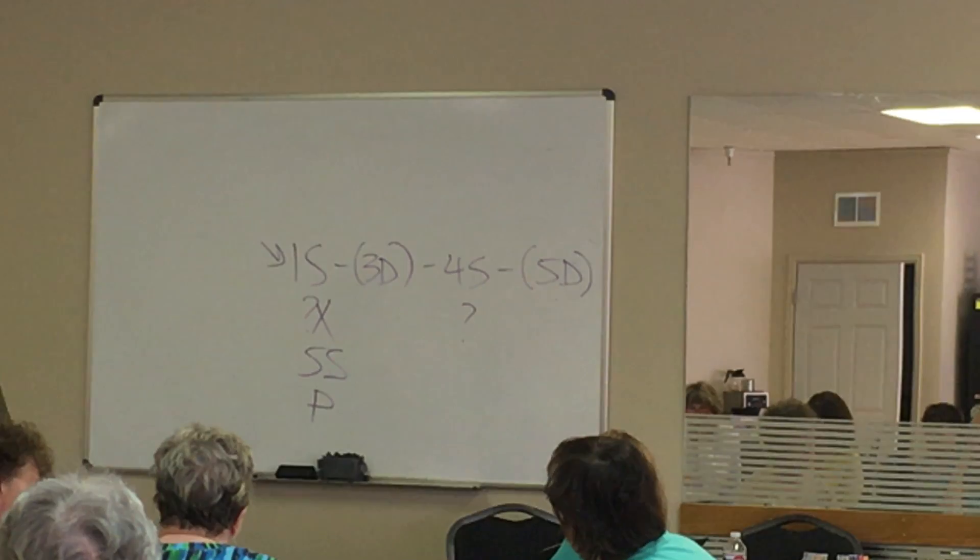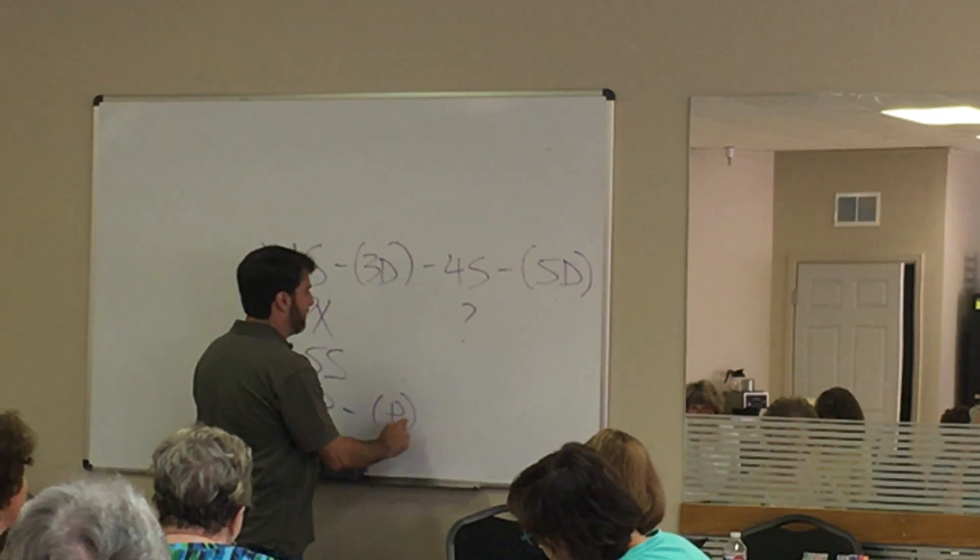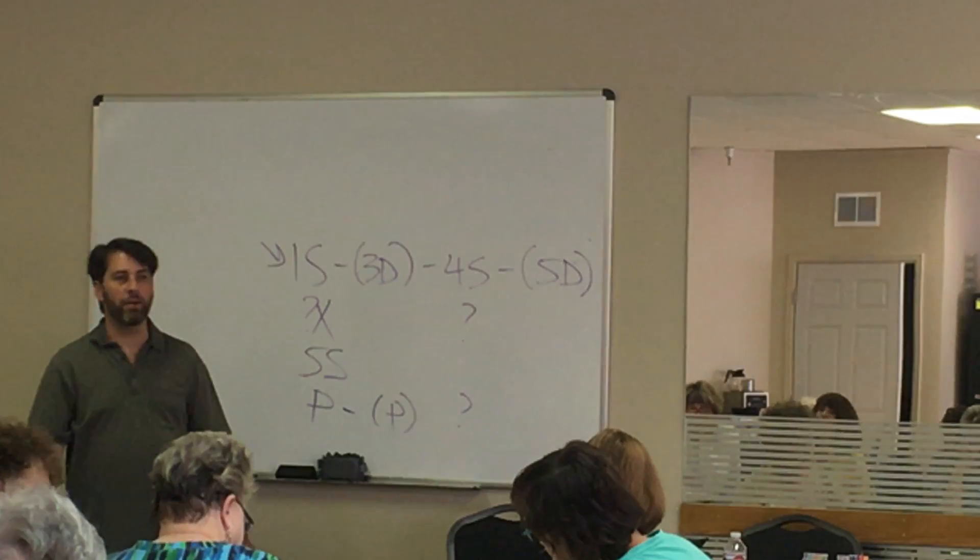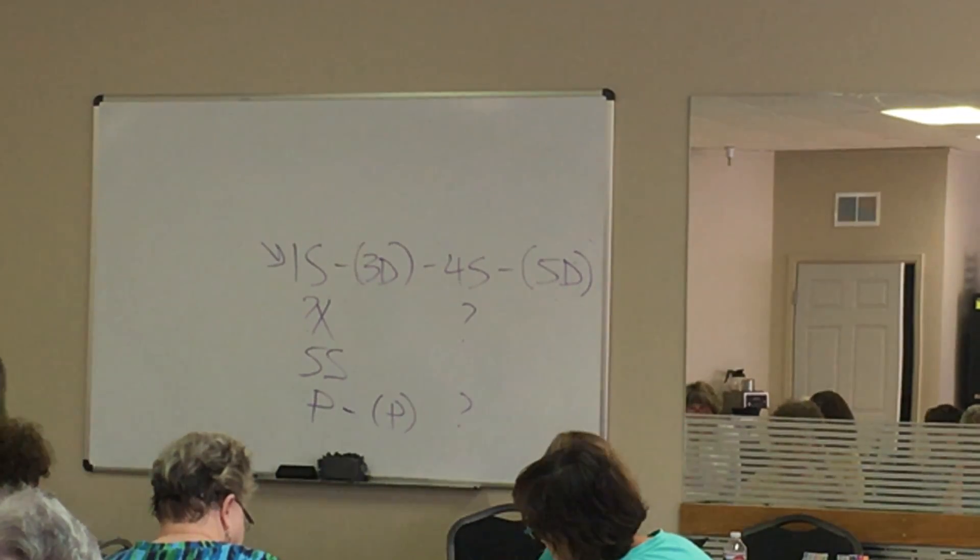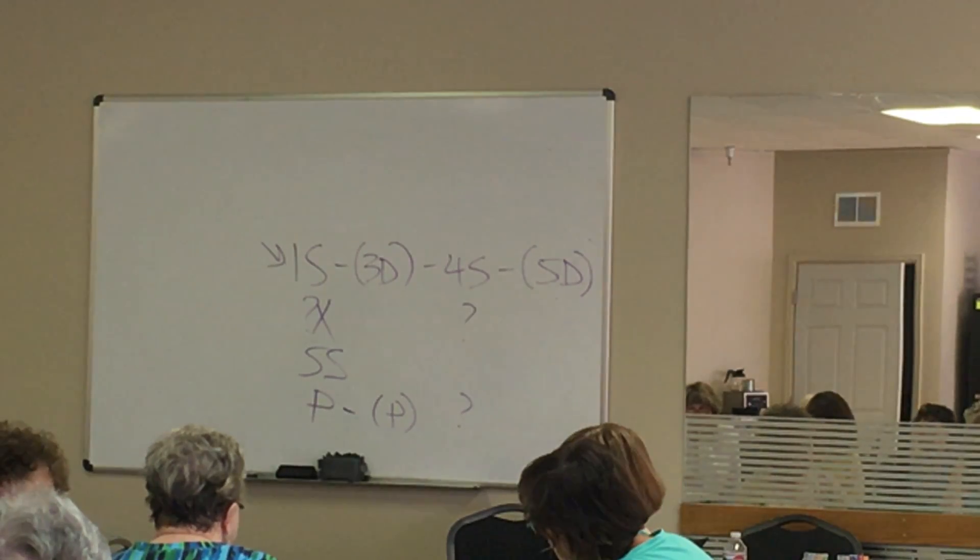I have neither a clear penalty double, nor a clear five spades. So, you pass. And then, let partner decide. Maybe partner bids five spades. Maybe partner doubles. And if partner doubles, then I think you should trust that.